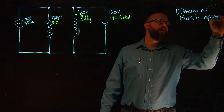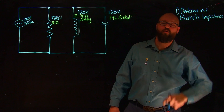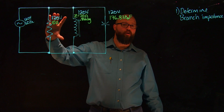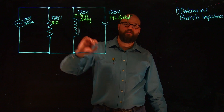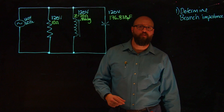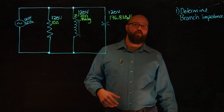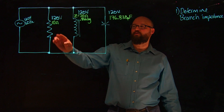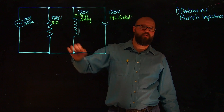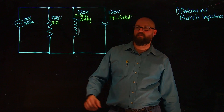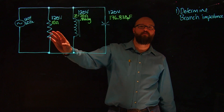If we look at our branches, we have a resistive load which has 10 ohms of resistance. For resistive loads, your impedance is always going to be equal to your resistance. So in this load, we've already found our impedance — we know it's 10 ohms.